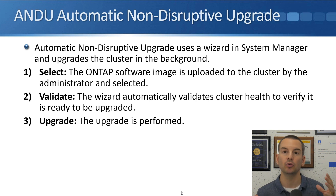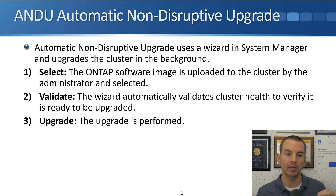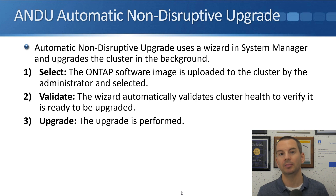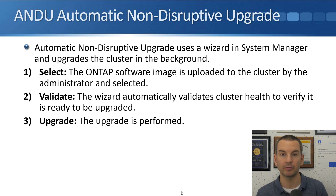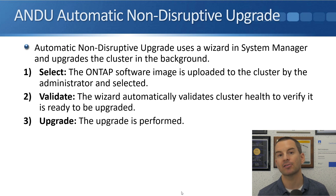You've already gone to the NetApp website, downloaded the new ONTAP software image, and copied it to an HTTP or FTP server. In the first stage of the wizard it is uploaded from the HTTP or FTP server to the NetApp storage system. You specify the version of ONTAP that you want to upgrade to, then click Next in the wizard. The next stage is the Validate stage.